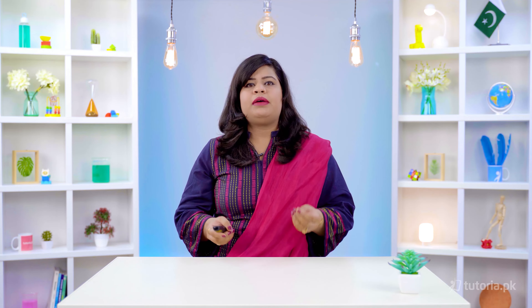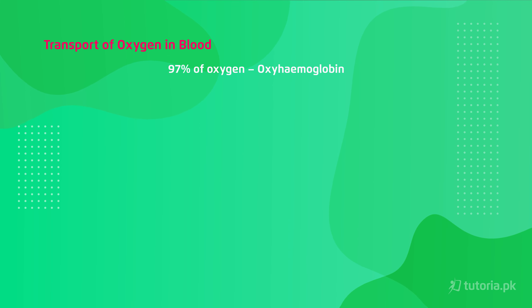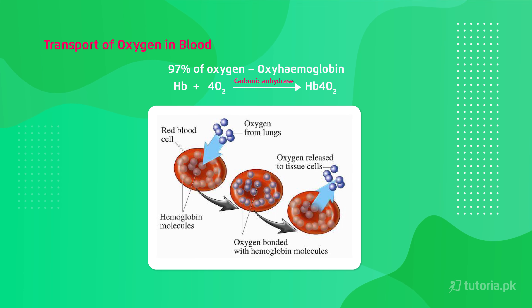Respiration involves the transport of respiratory gases in various regions of our body by means of blood. For oxygen transport, 97% of oxygen is carried in the form of oxyhemoglobin. Hemoglobin has four molecules of oxygen attached, facilitated by the enzyme carbonic anhydrase, forming oxyhemoglobin which is transported throughout the blood.